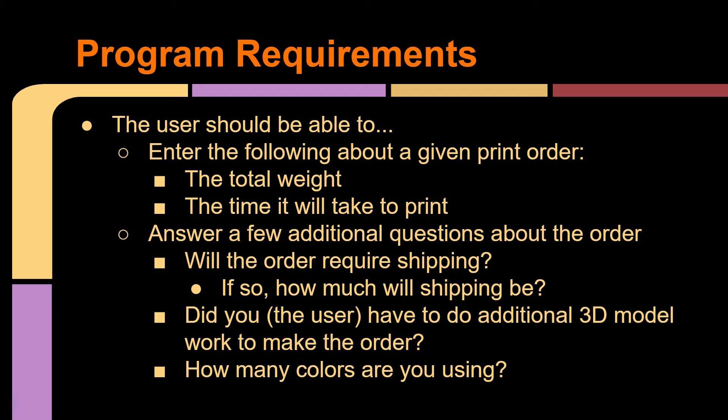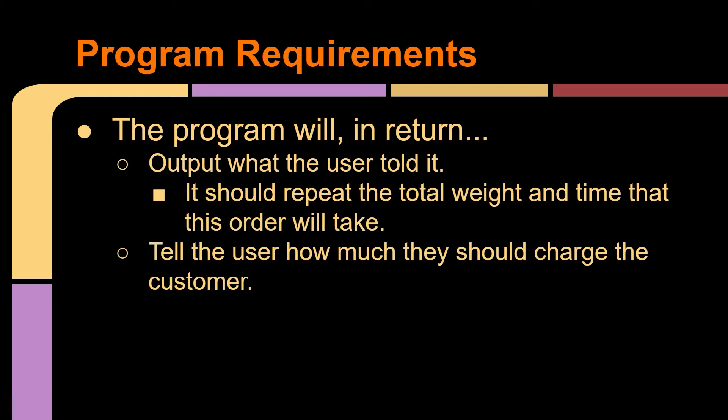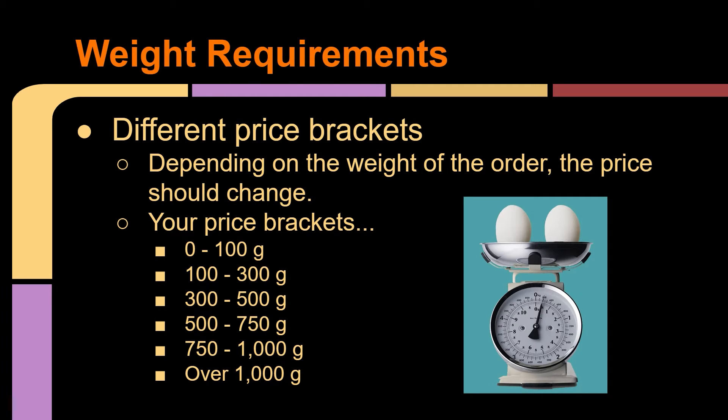If the user purchasing it says they don't care about it being painted and just want it printed in a specific color, that's fine. After that information is inputted, the program will output what the user told it — it should repeat the total weight and time the order will take, then tell the user how much they should charge the customer. There are different price brackets based on weight: 0 to 100 grams, 100 to 300, 300 to 500, 500 to 750, 750 to 1,000, and over 1,000.